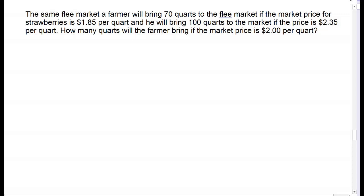It's the same flea market. If the going price at this particular market is $1.85, the farmer will bring 70 quarts of strawberries. Because the price is higher at $2.35, he'll bring more—he'll bring 100 quarts. How many quarts will the farmer be willing to bring if the price is at $2 per quart?